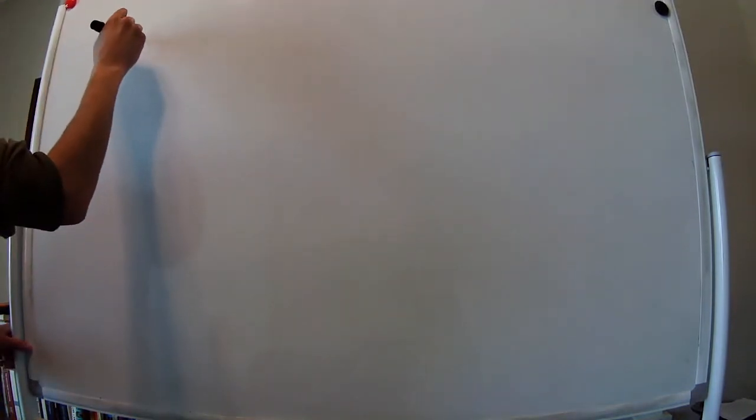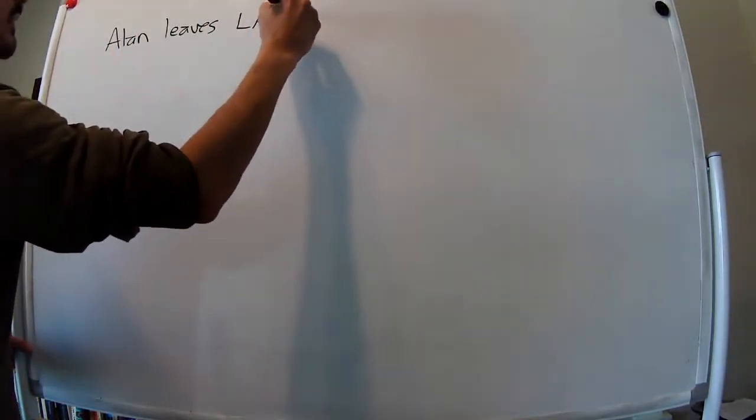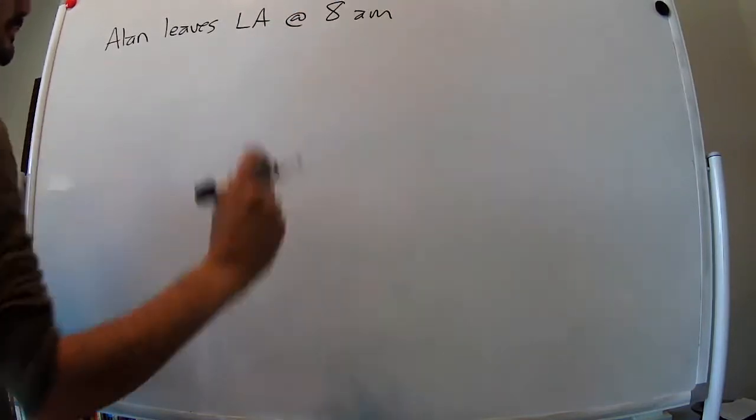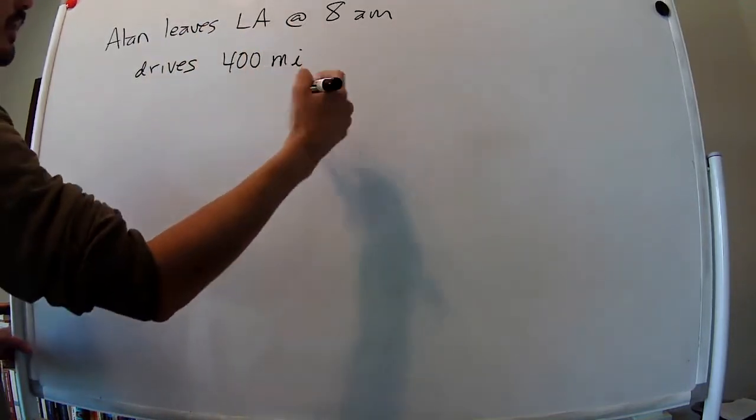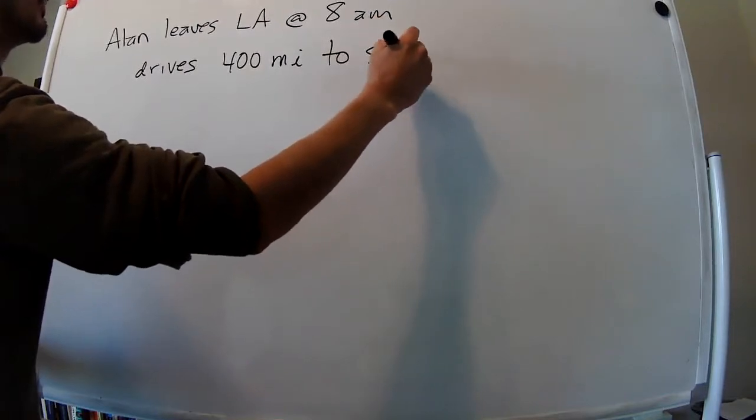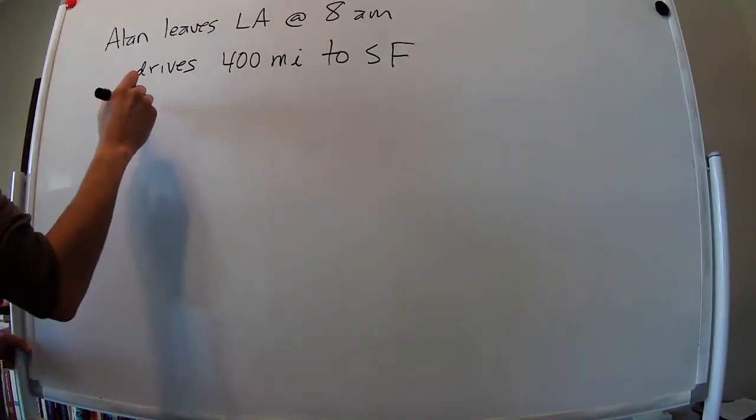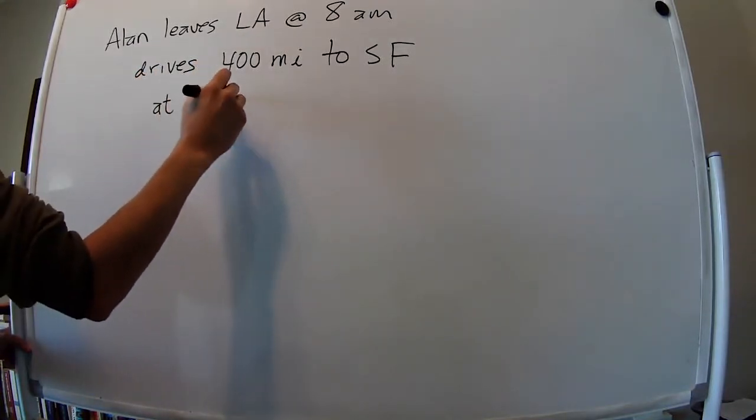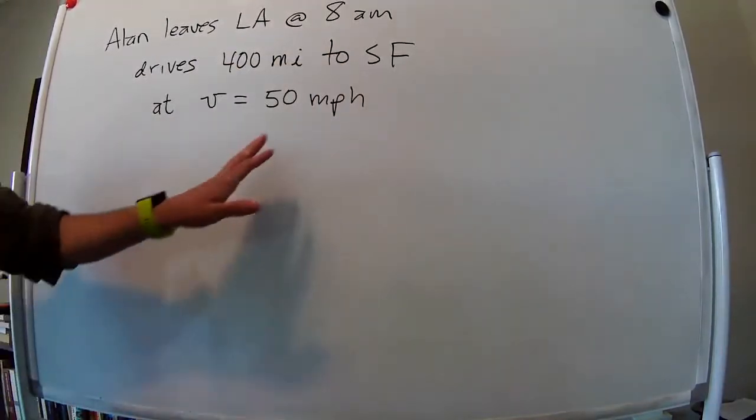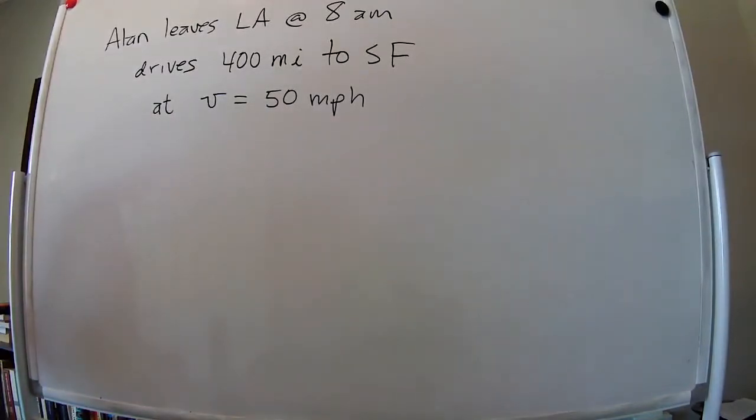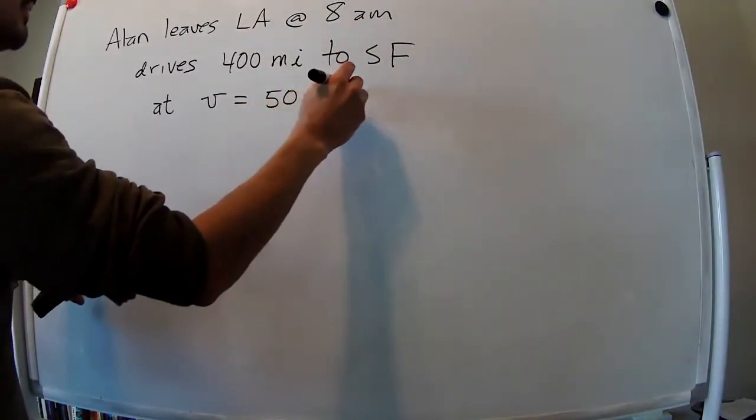So Alan leaves LA at 8am, drives 400 miles north to San Francisco, and throughout this trip is driving at a speed of 50 miles per hour. So this is typically how we write miles per hour, but to make things a little easier with the algebra, we're gonna write miles per hour.